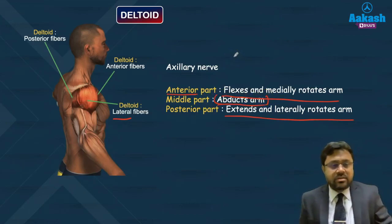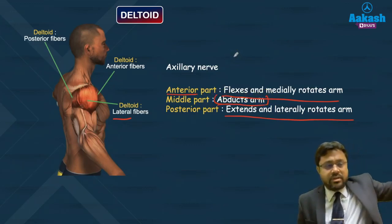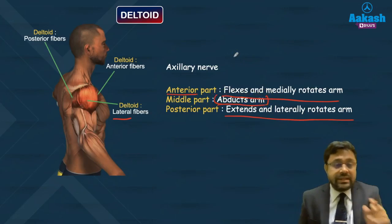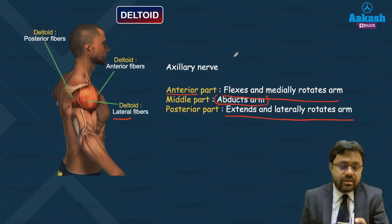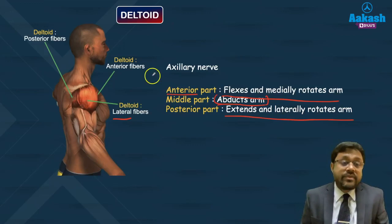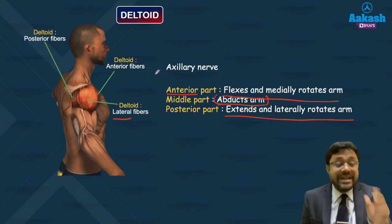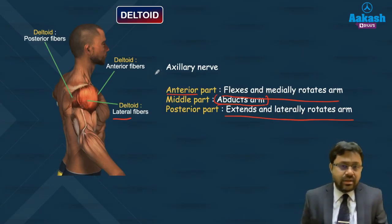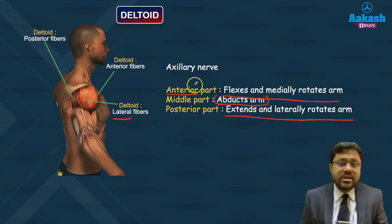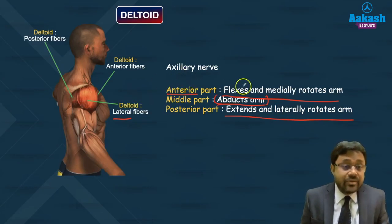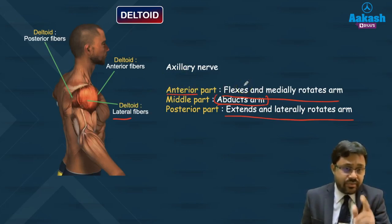Abduction is very important. Please note: the initiation of abduction of the shoulder joint is not done by the deltoid. The range from 0 to 15 degrees is initiated by supraspinatus. From 15 to 90 degrees — the mid-range of glenohumeral shoulder abduction — is performed by the deltoid. So the deltoid performs mid-range shoulder abduction, not initiation.